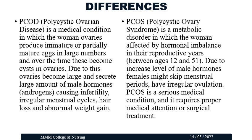PCOD is polycystic ovarian disease — a medical condition in which the woman's ovaries produce immature or partially mature eggs in large numbers. Over time, these become cystic ovaries, causing the ovaries to become large and secrete large amounts of androgens, leading to infertility, irregular menstrual cycle, hair loss, and abnormal weight gain. PCOS is polycystic ovarian syndrome — a metabolic disorder affecting women between 12 and 51 years due to hormonal imbalance, causing skipped periods, irregular ovulation, and conditions like diabetes, infertility, and acne. It is a fairly common disorder but has no exact cure.